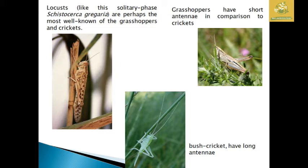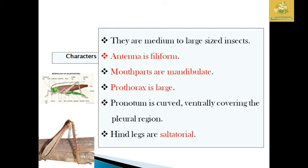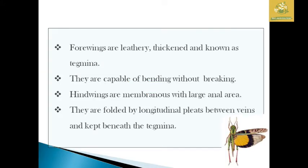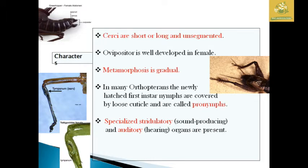The characters of Orthoptera: they are medium to large-sized insects. The antennae are filiform in nature and the mouthparts are mandibulate. The prothorax is large, and the pronotum is curved and bent, covering the pleural region of the body. The hind legs are saltatorial, used for jumping. The forewings are leathery and thick, known as tegmina, capable of bending without breaking.